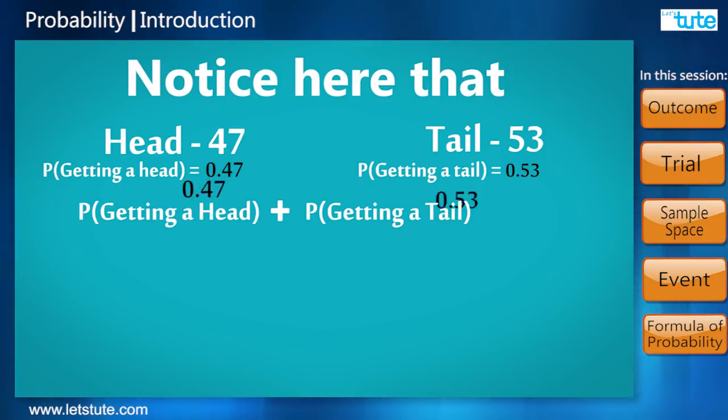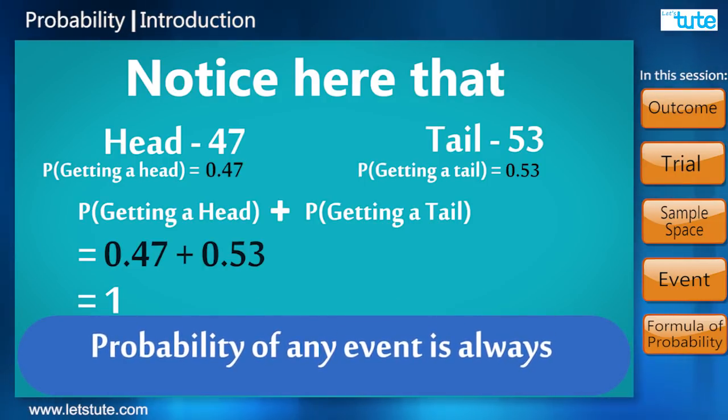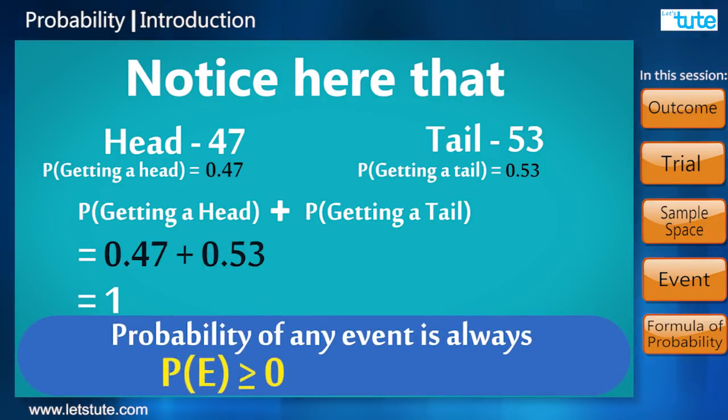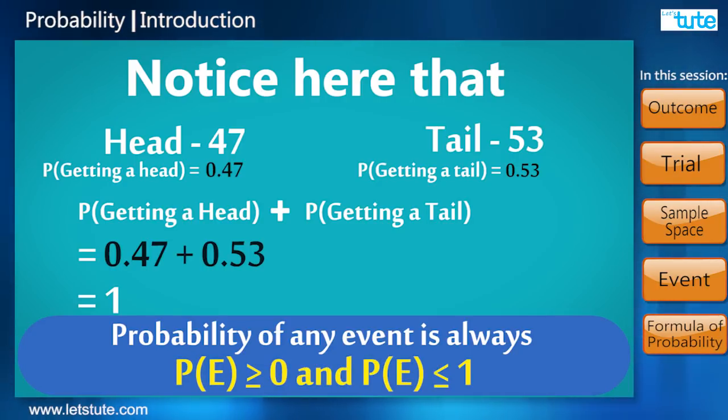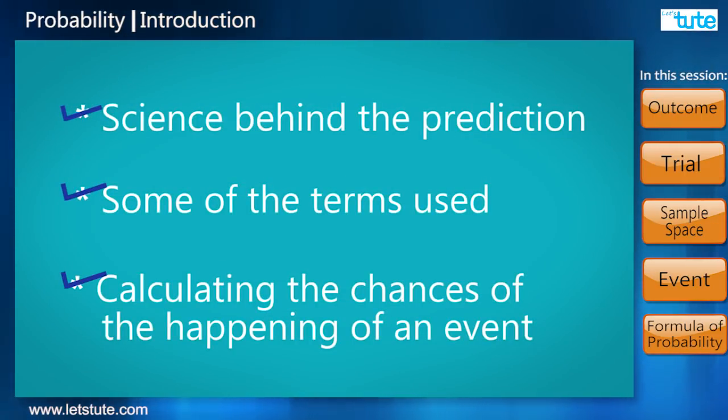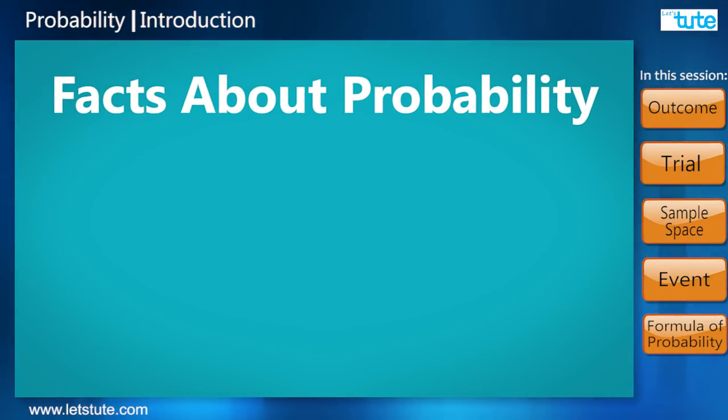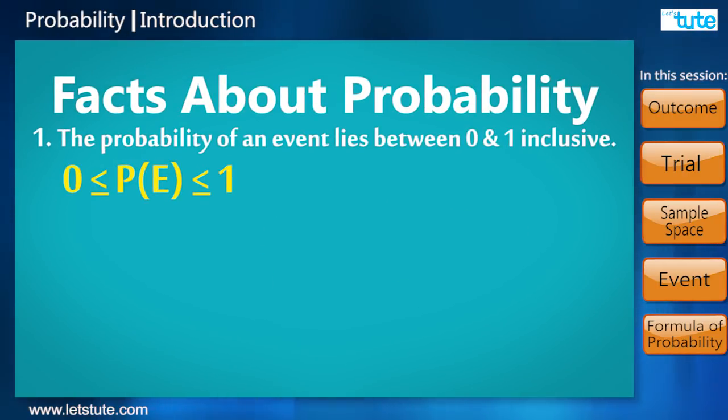Also, probability of any event is always greater than zero or equal to zero, and less than one or equal to one. Now a few facts about probability we can state are: the probability of an event lies between zero and one.